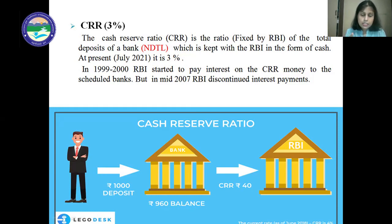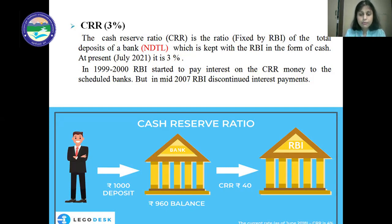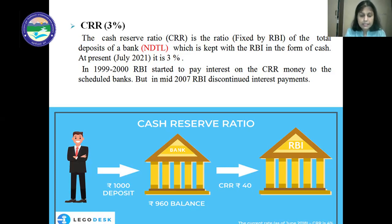This picture explains how the CRR works. Suppose there are rupees 1,000 deposits with the bank and the CRR is 4%. That means 4% of 1,000, which is rupees 40, has to be kept with the RBI. The remaining rupees 960 is available with the bank for further lending.